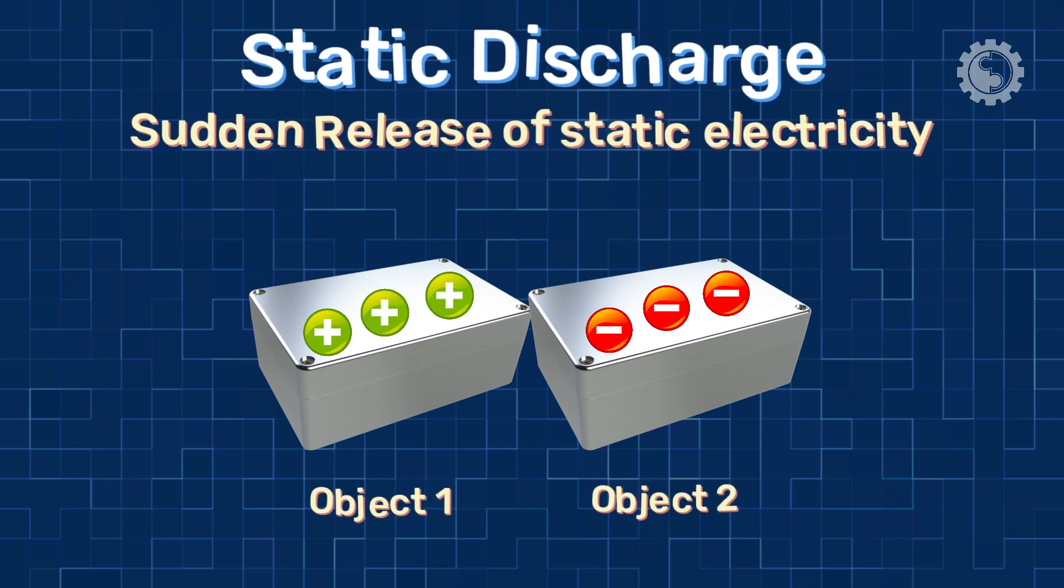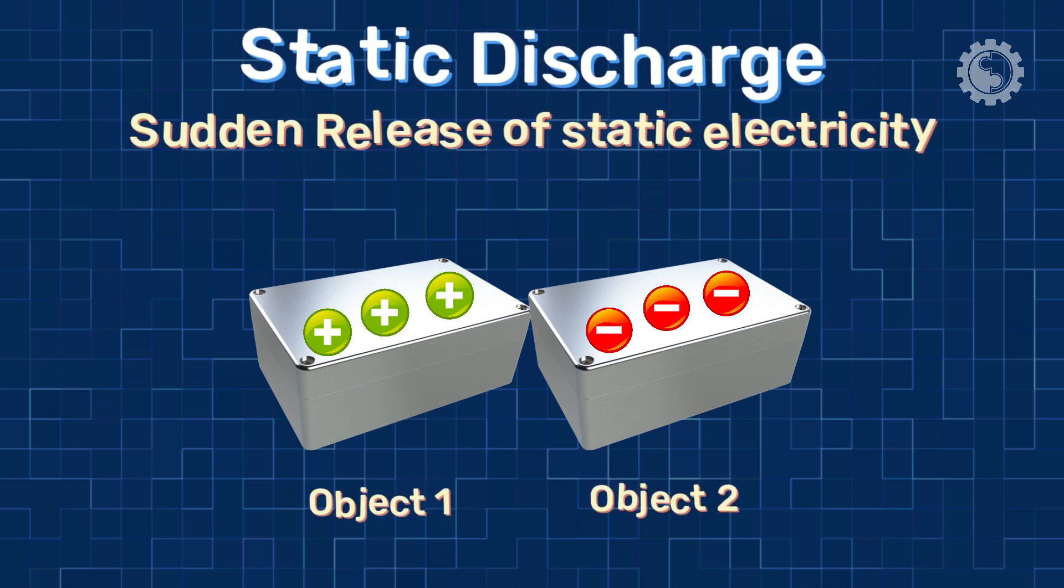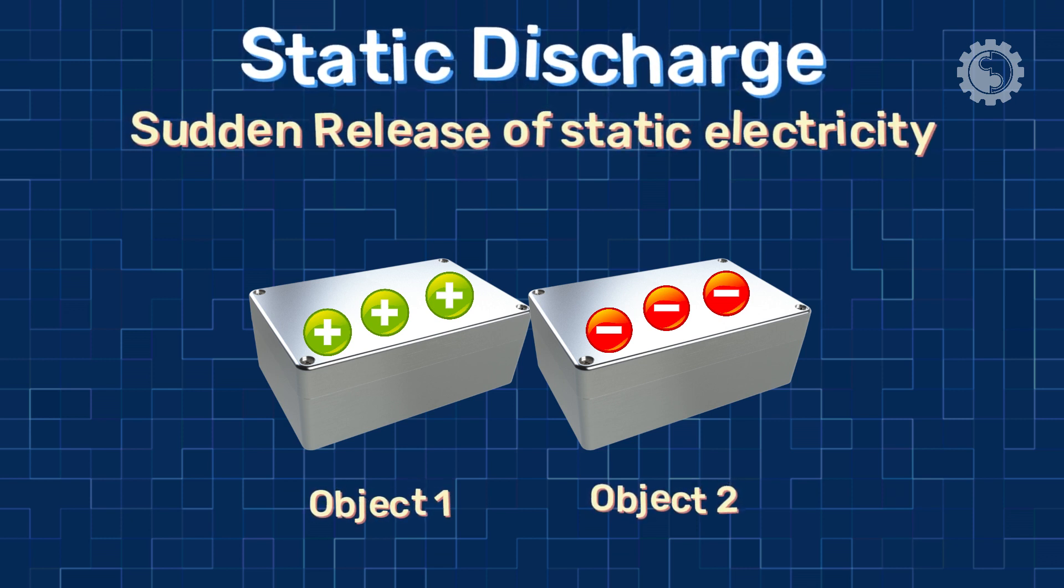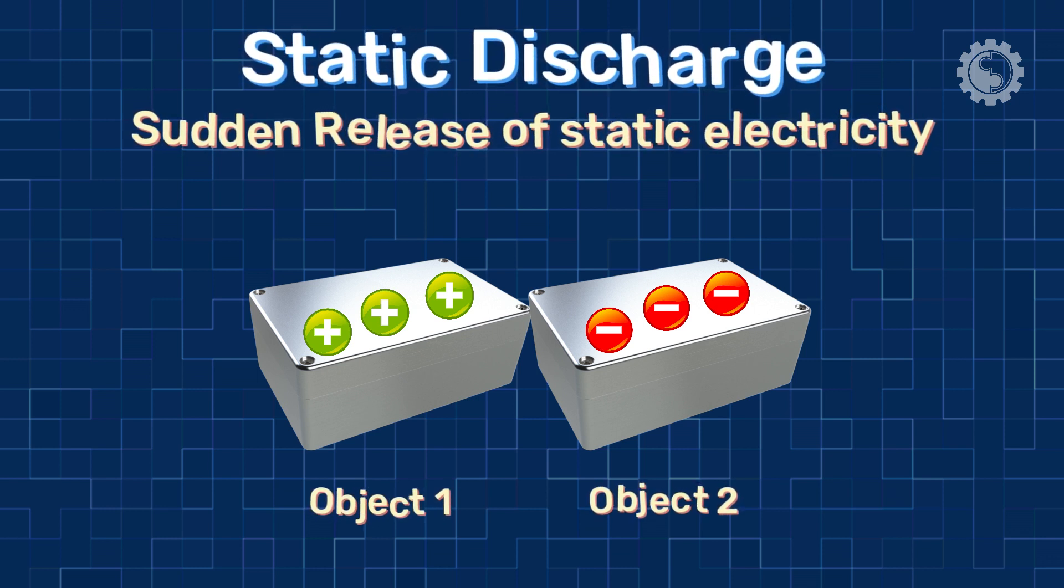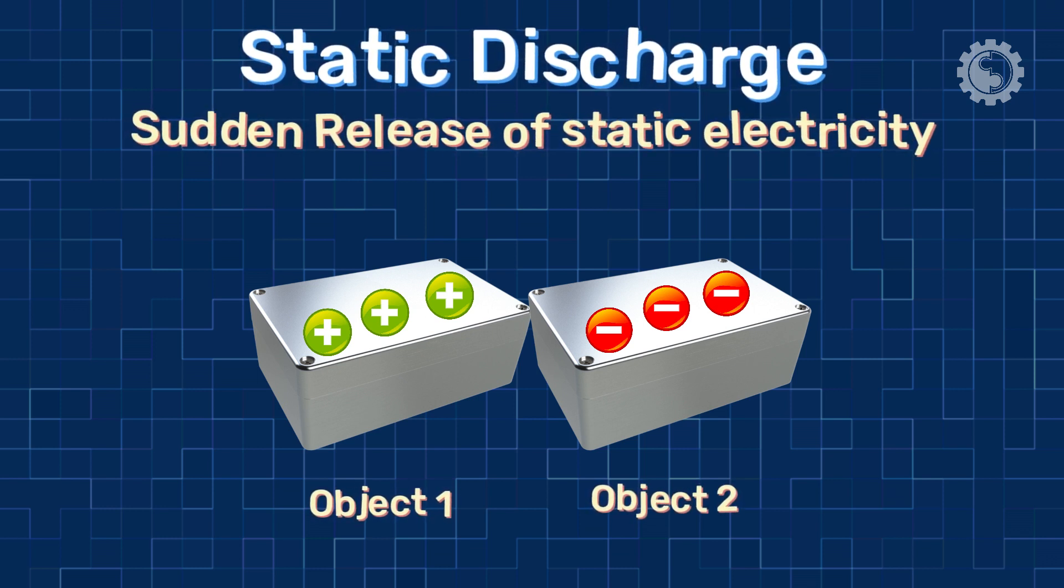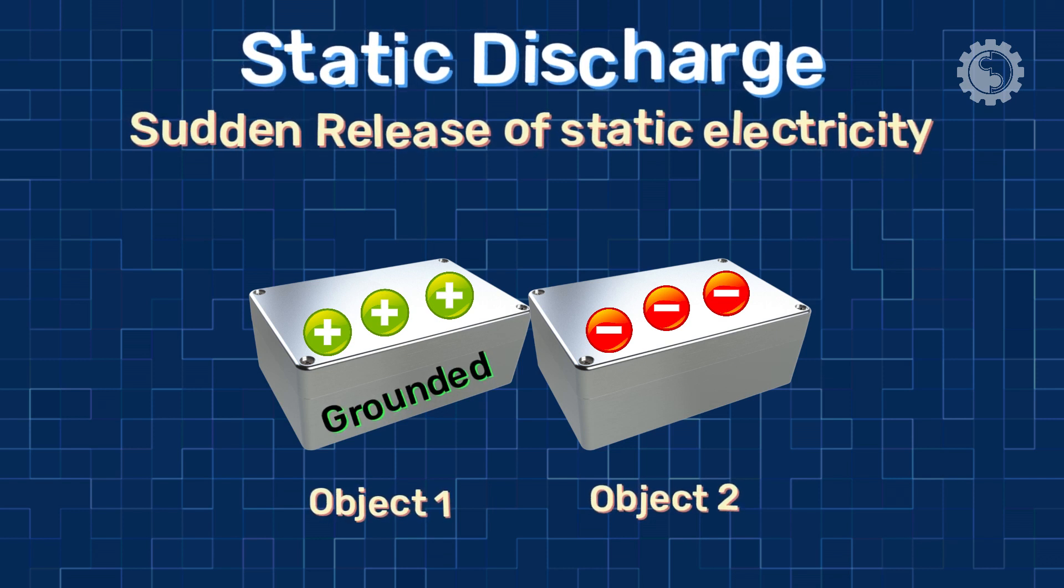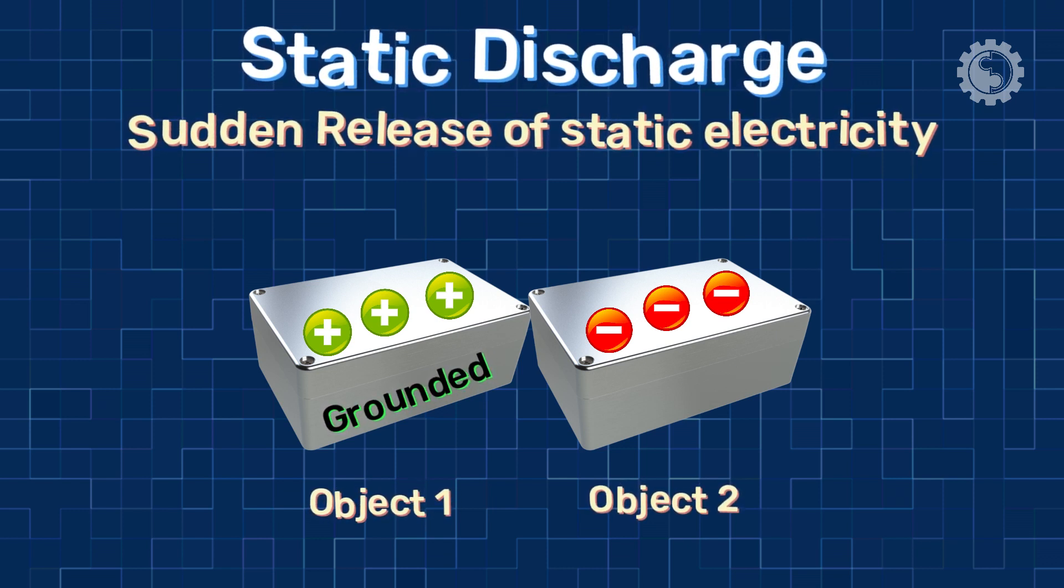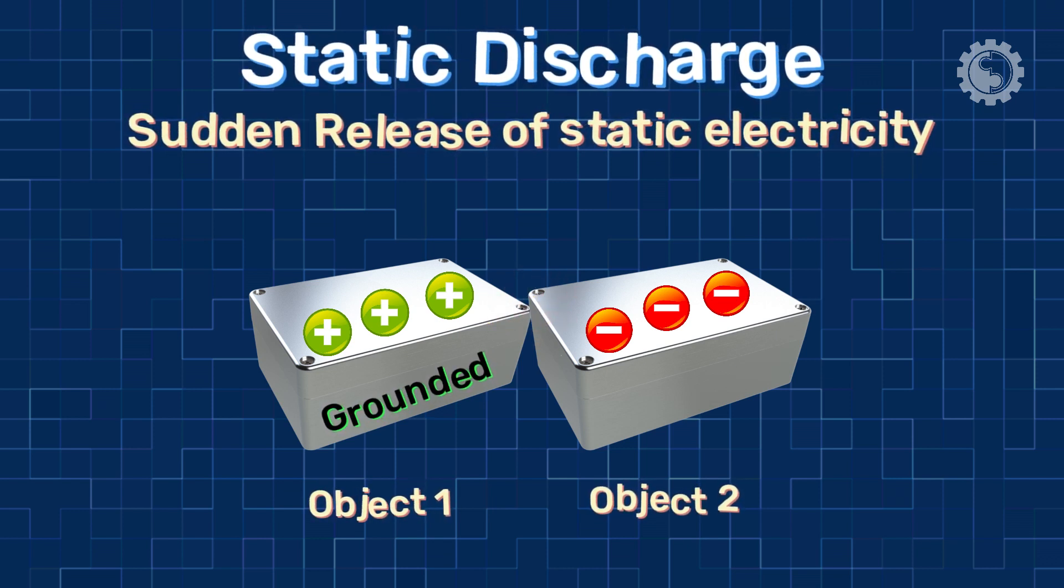Static discharge is the sudden release of static electricity. This can happen when two objects with opposite charges come into contact with each other or when an object with a static charge is grounded. Here, the ground or earth has a lot of charge-needing atoms. The static discharge can be in the form of a spark or static shock.